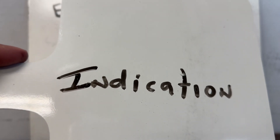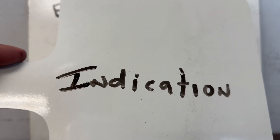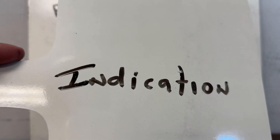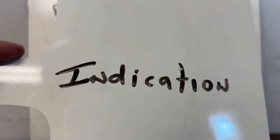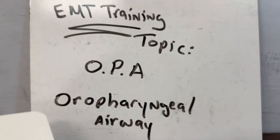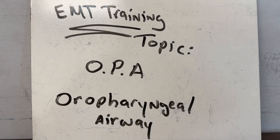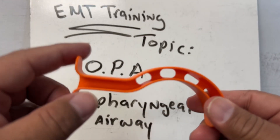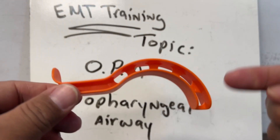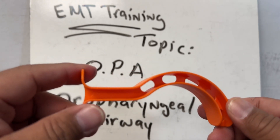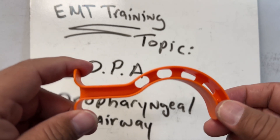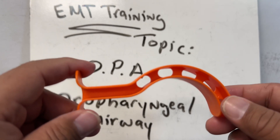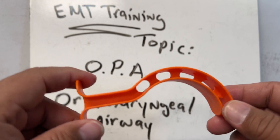The OPA is indicated for an unresponsive patient without a gag reflex, or any apneic patient being ventilated with a BVM. This is one of the tools in your toolbox as a technician. The next video will show how to insert it. If you found this helpful, please like, subscribe, and share.